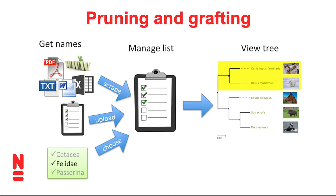Beyond that, if we can figure out the names, there's still the issue of pruning our tree down to a set of names we're interested in. Lately, there have been community initiatives to create generic services that can present a subtree for a very large tree. The idea is that if there is a piece of text containing multiple species names, some services can recognize those names, scrape them out of the text, create a clean list, and then present a tree for those names.